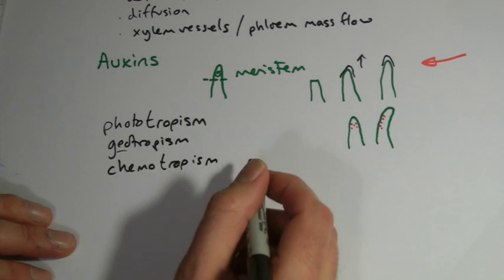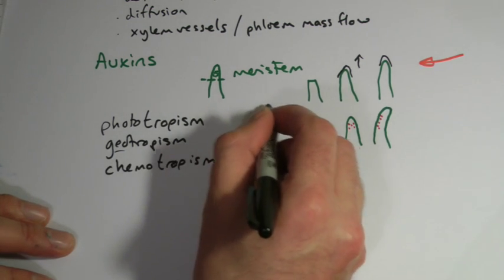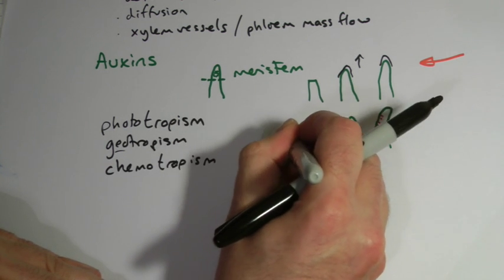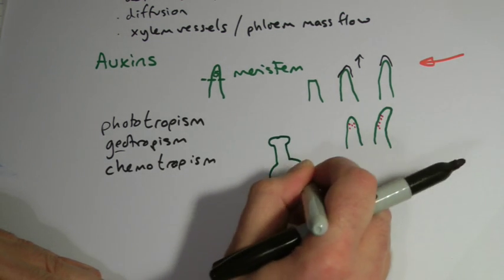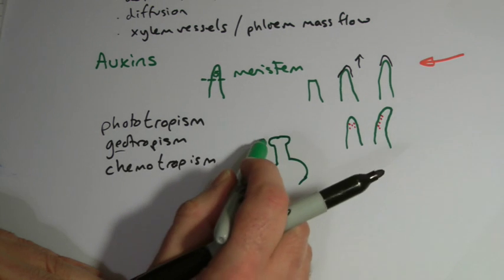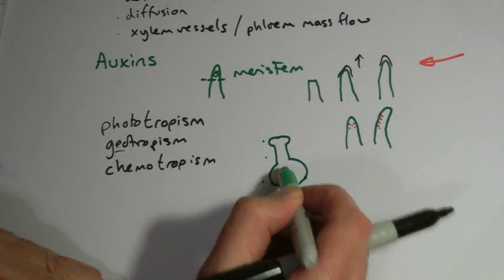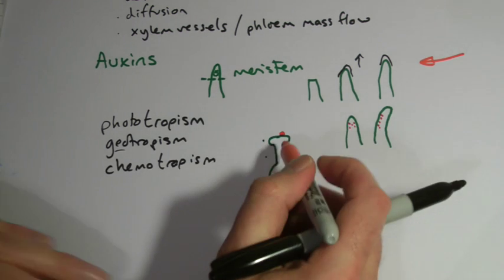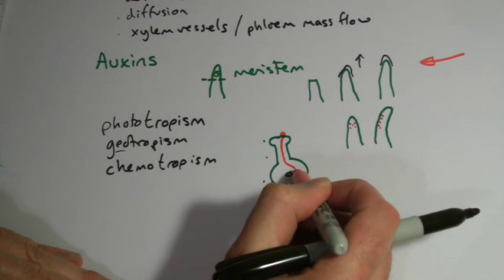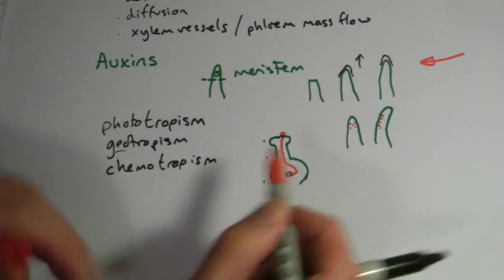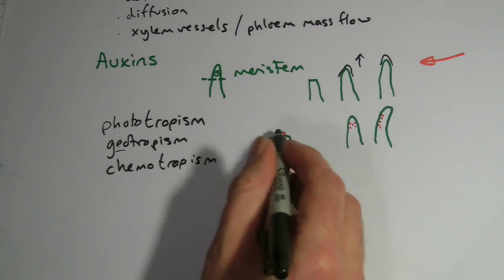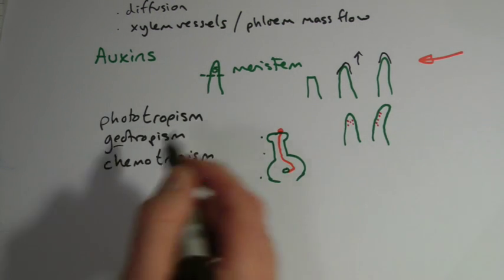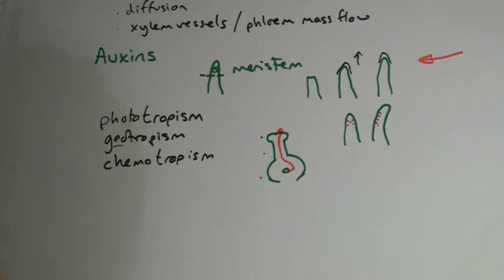An example of chemotropism is pollen tubes. When pollen lands on the stigma — the female part of the plant — it grows a long tube down through the style to the ovary where the egg cell is. The pollen nucleus travels all the way down. It doesn't 'know' which way to go — it's simply responding to the stimulus of a chemical gradient.